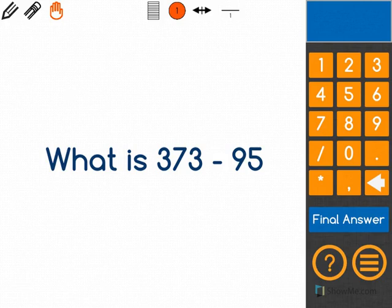The question says, what is 373 minus 95? I can use column subtraction and a diagram to help me solve this.